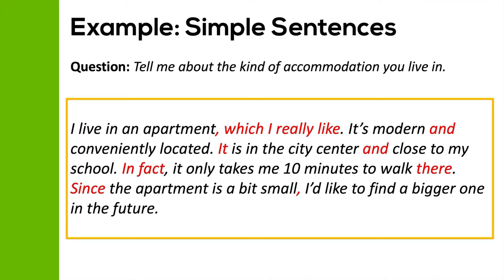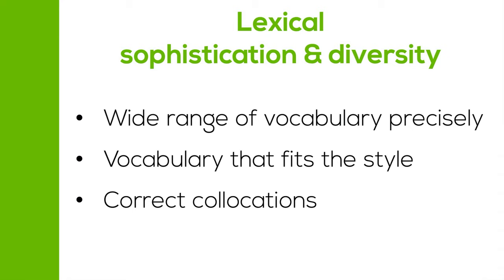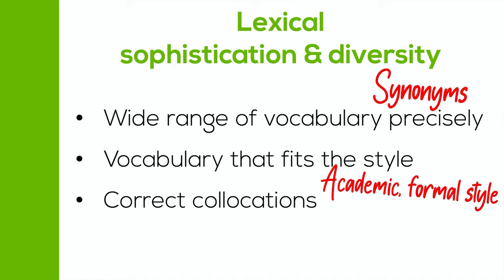Now let's move on and take a look at lexical sophistication and diversity. Remember, lexical just means vocabulary. To get a good score, you want to use a wide range of vocabulary precisely — you don't want to be repeating the same words over and over again. Instead, you can use different synonyms to show that you have a wide vocabulary. In addition to that, you want to use vocabulary that fits the style. The Duolingo English test is an academic test, so you want to use academic and formal vocabulary correctly. And lastly, you want to be able to use collocations — words that combine naturally together.